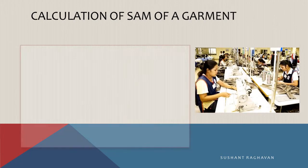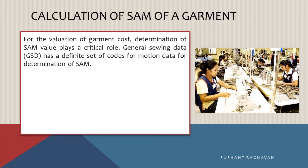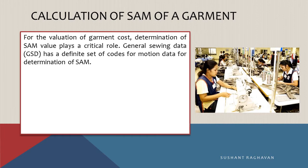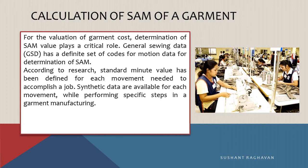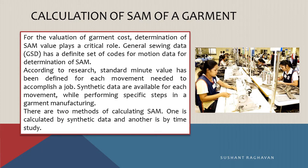Calculation of SAM of a garment. For the valuation of garment cost, determination of SAM value plays a critical role. General sewing data (GSD) has a definite set of codes for motion data for determination of SAM. According to research, standard mate values have been defined for each movement needed to accomplish a job. Synthetic data are available for each movement while performing specific steps in garment manufacturing. There are two methods of calculating SAM: one is calculated by synthetic data and the other is by time study.